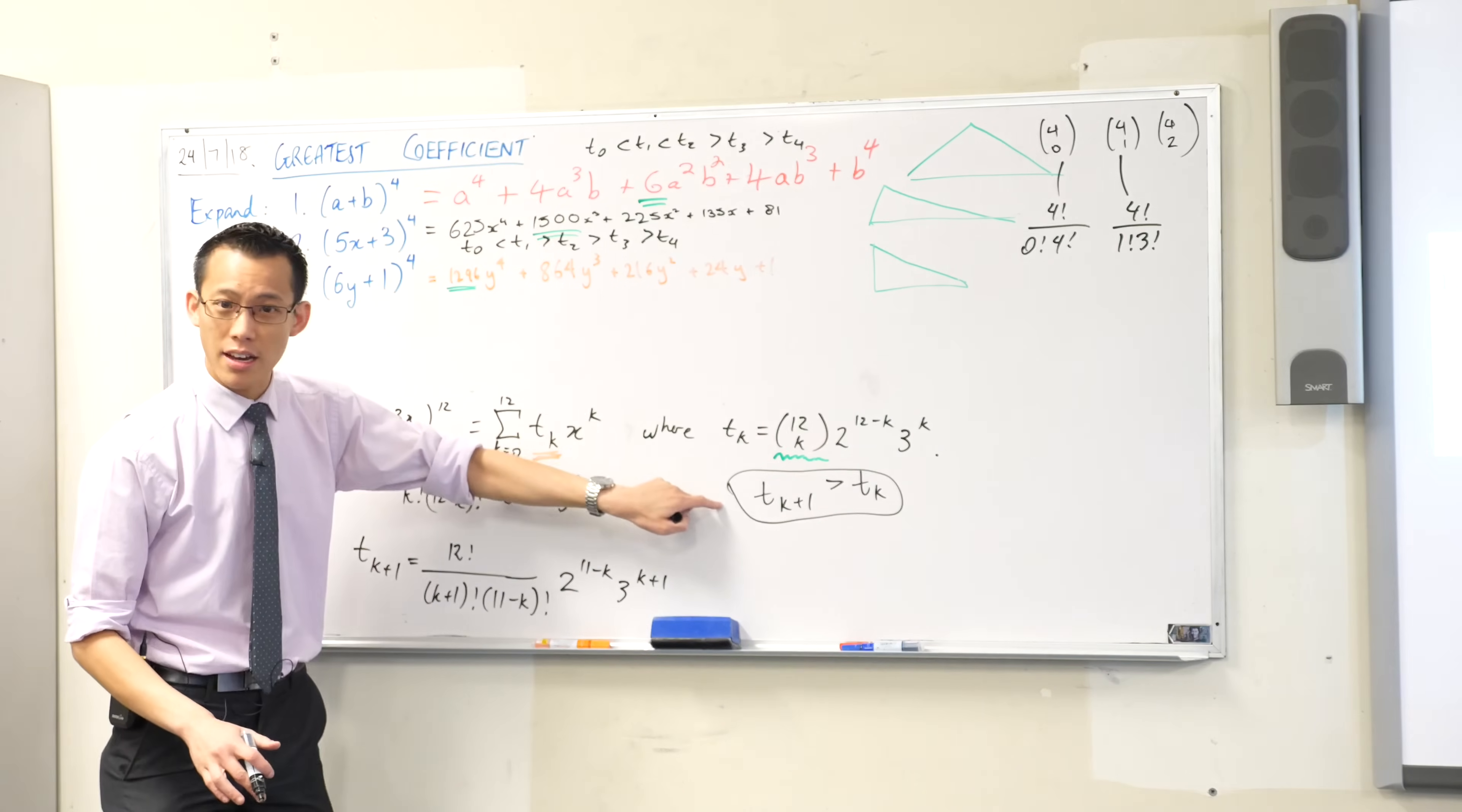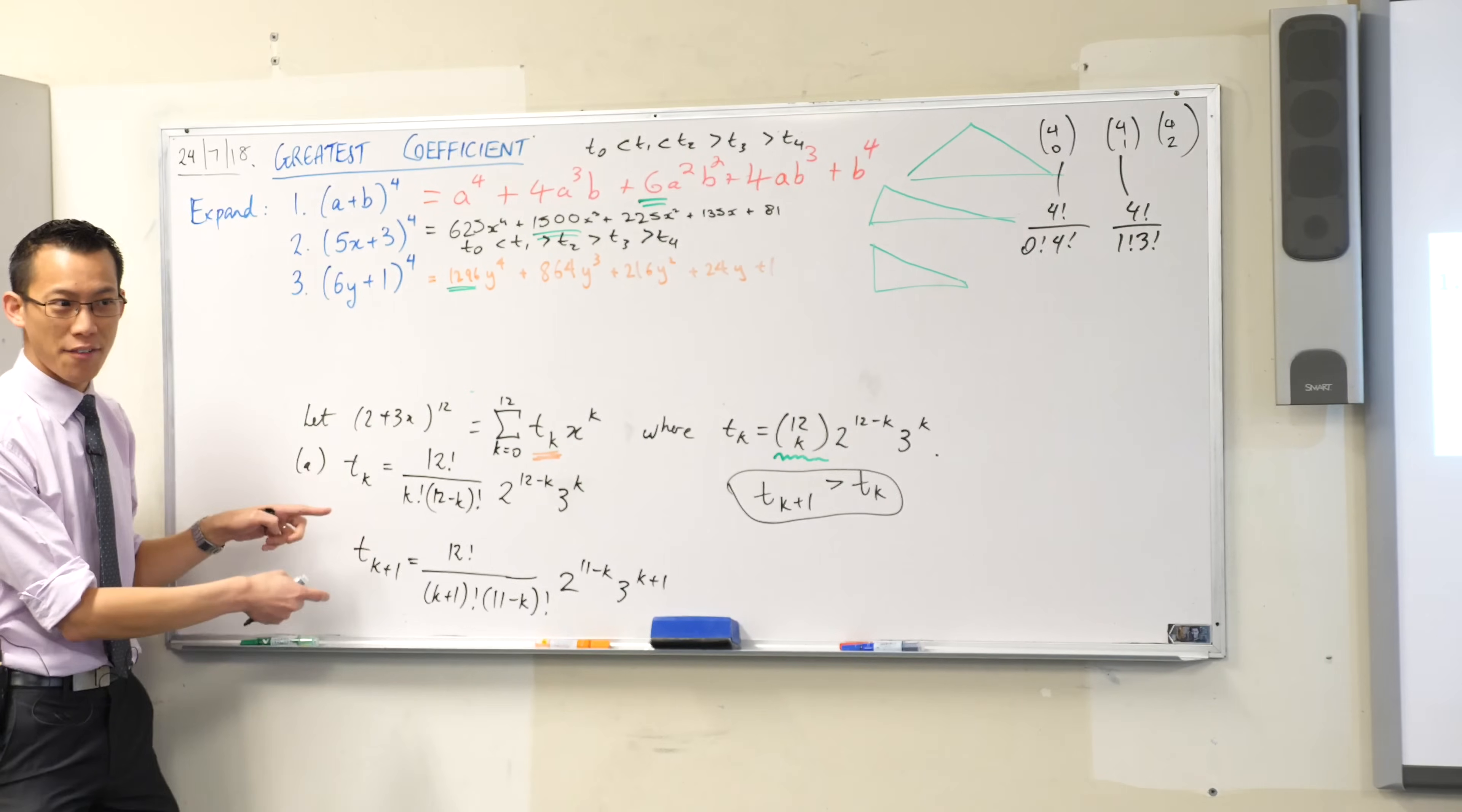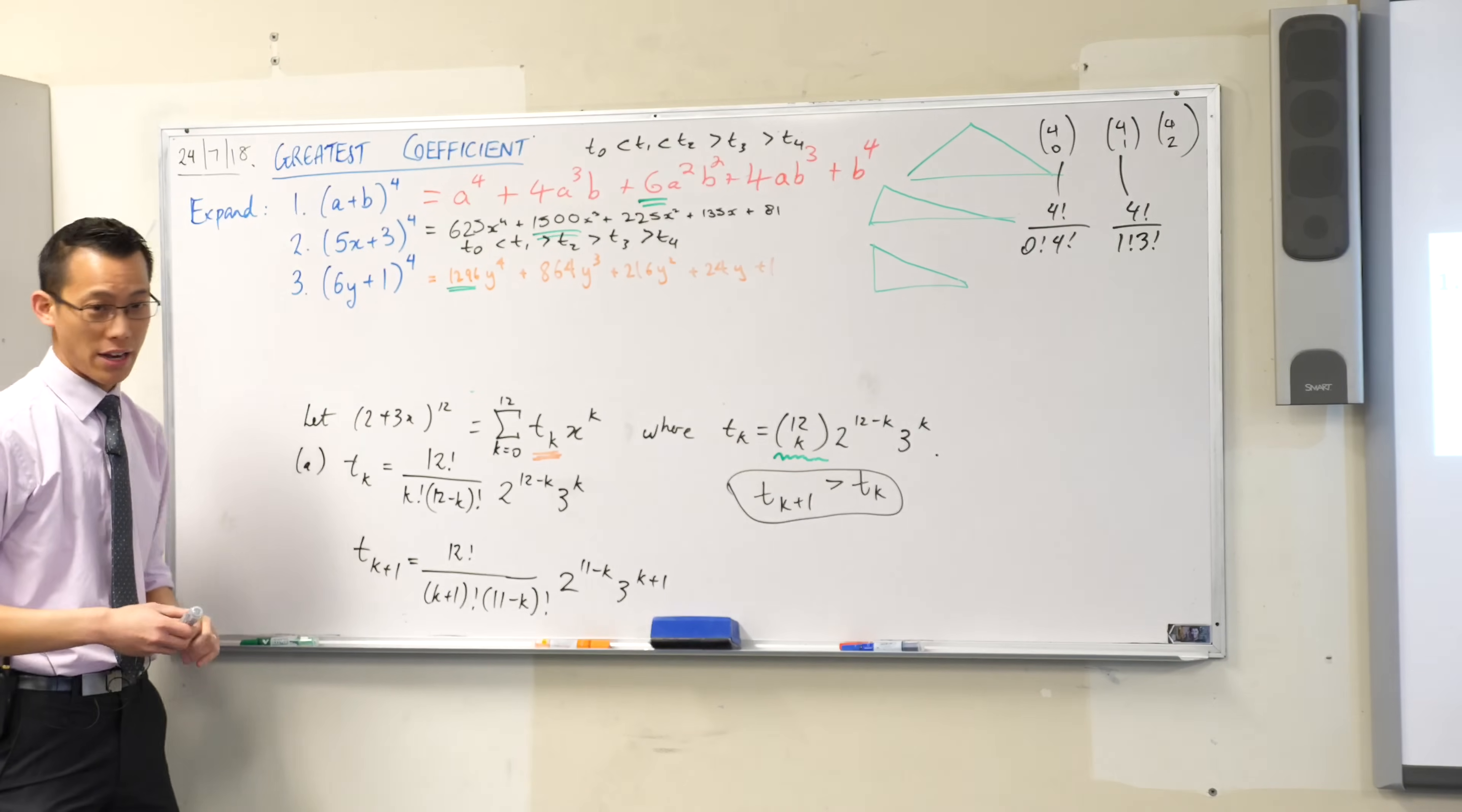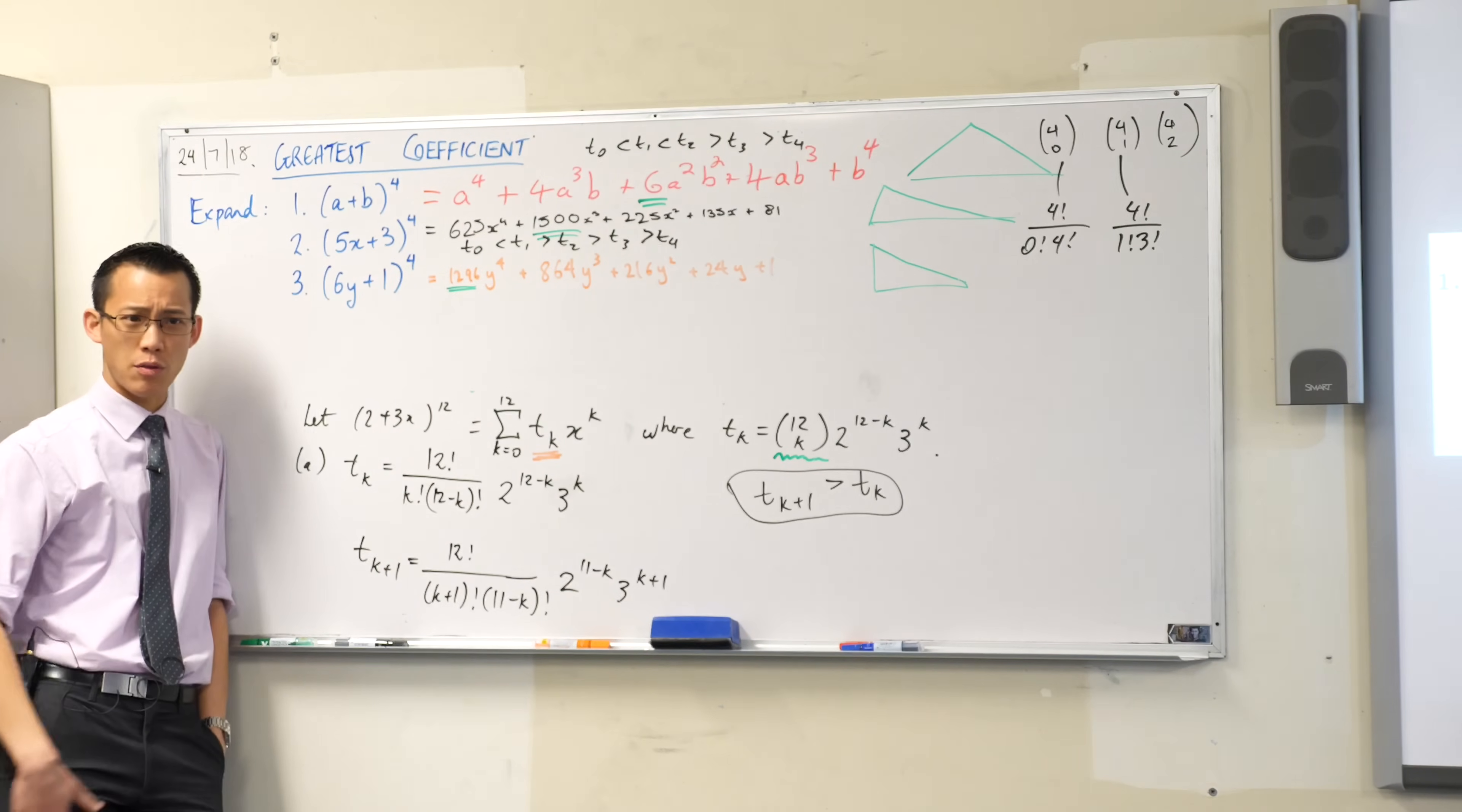So this is the thing I want to solve, this is the inequality. Now can you see why therefore we spent part a finding expressions for this and this? Because these are going to feed into my inequality. Now the last thing I want to point out is, before we actually start to do this, have a look at t sub k and t sub k plus 1. Just have a look at those expressions.